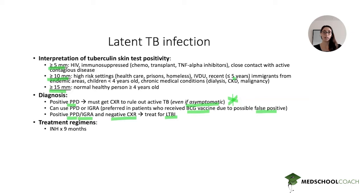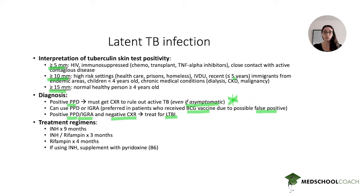Treatment regimens for latent TB include: classically, isoniazid for nine months; isoniazid plus rifampin for three months; or rifampin alone for four months. They won't make you choose between these, but if you see isoniazid for nine months, that's the classic teaching and it's correct. Remember: if you're using isoniazid, you must supplement with pyridoxine — vitamin B6.